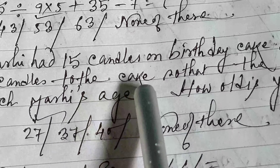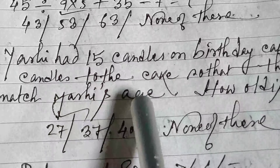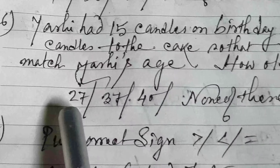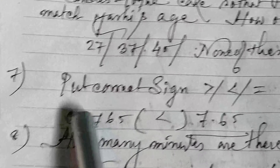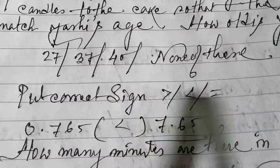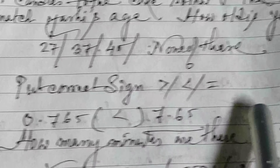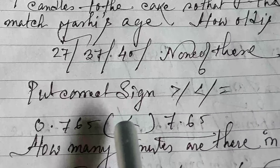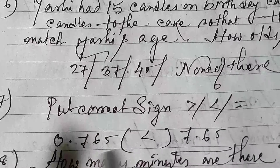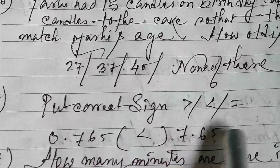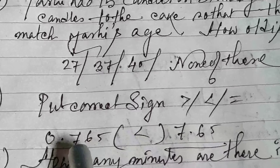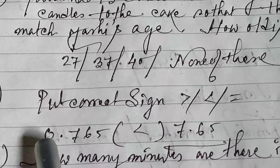Next: Yashi had 15 candles on her birthday cake. Aman added 12 more candles so that the candles would match Yashi's age. Pehle 15 tha, uske baad 12 candles add kar diye gaye. How old is Yashi? 15 plus 12 is 27, so the answer is 27.